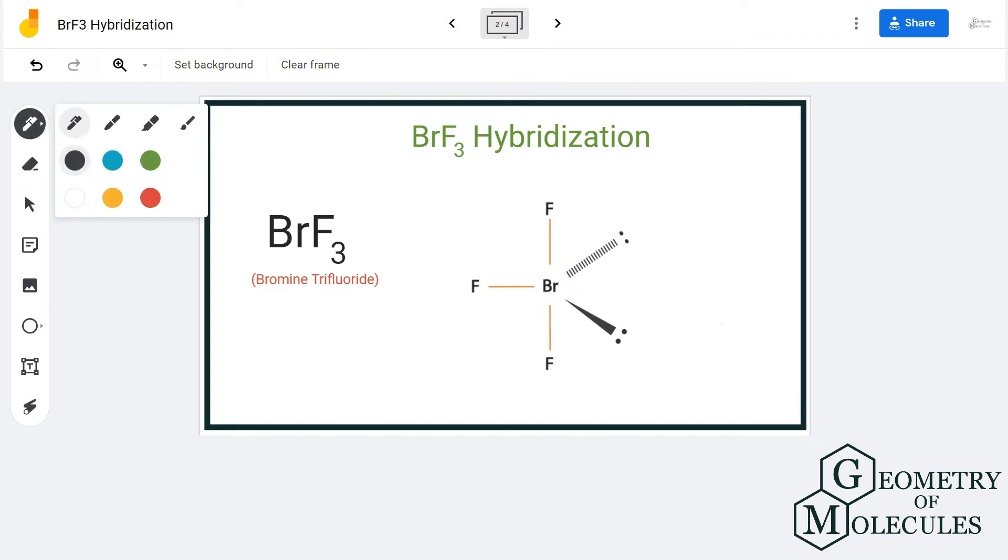Here we are going to look at the hybridization of the bromine atom in BrF3 because it is the central atom forming bonds with three fluorine atoms. To know the hybridization, we will use the formula of steric number.